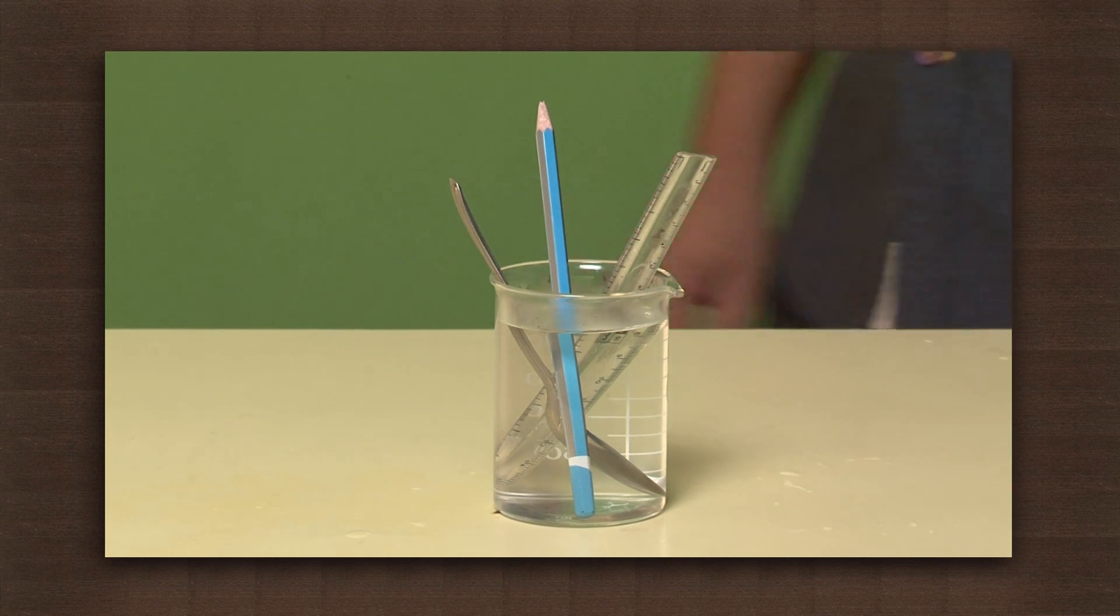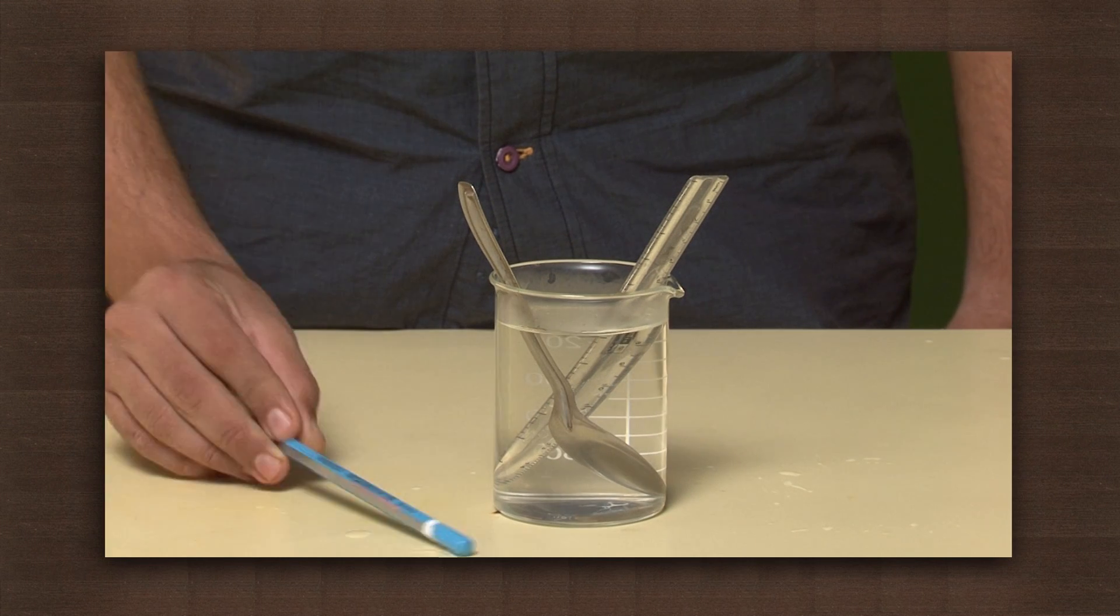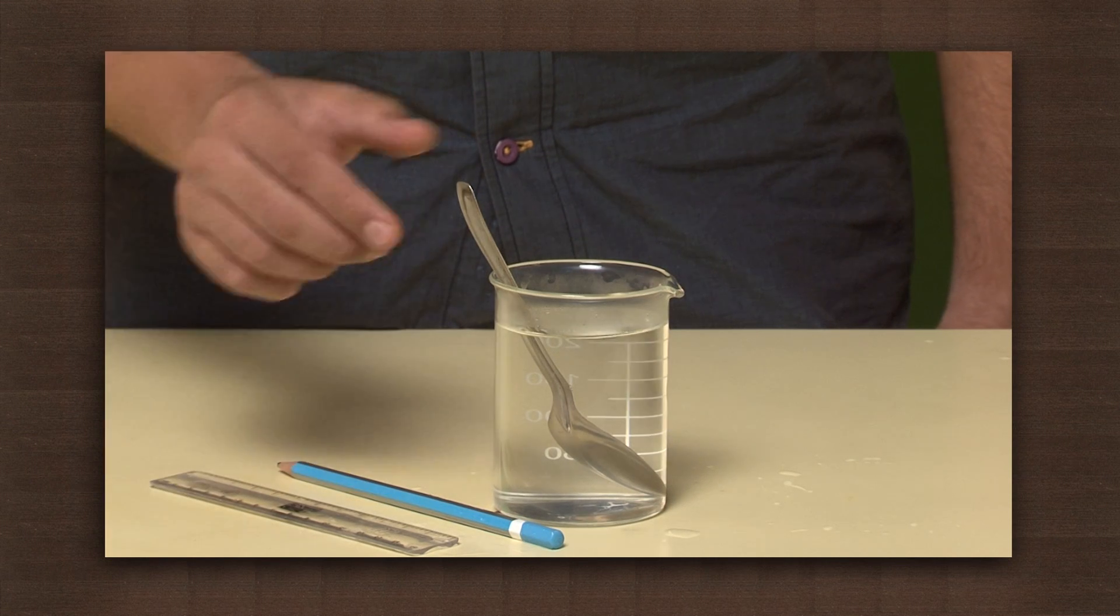After a few minutes touch each of them. You find the wooden pencil and plastic scale are still cold at the top while the metal spoon has become hot.